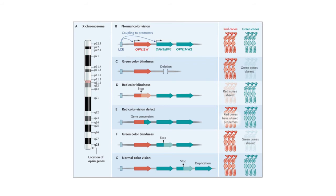Some chromosomes will carry only one opsin — for example, just a red one with no green. Clearly a person with that as their only opsin will not be able to distinguish red from green. Some colorblindness alleles illustrate important points: if there's a stop codon in the middle of the red protein-coding gene, that leads to an inactive red gene and the person will have normal green but will not be able to distinguish red from green.